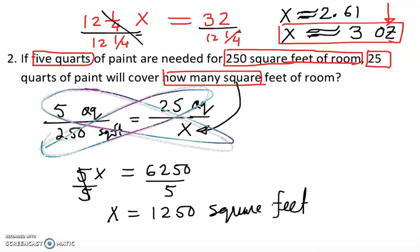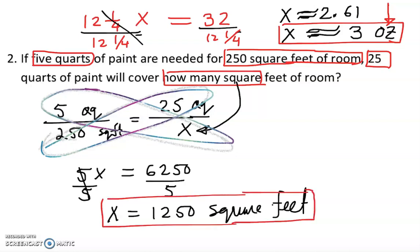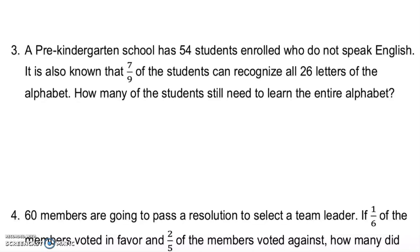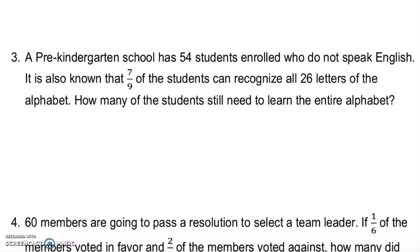That's the answer — that's how you work it out. Let's take a look at a couple more problems. This next one is a different kind of problem — you can use proportion or arithmetic. A free community school has 54 students. It is also known that seven out of nine students can recognize 26 letters of the alphabet. The question asks how many students still need to learn — meaning they don't know yet.